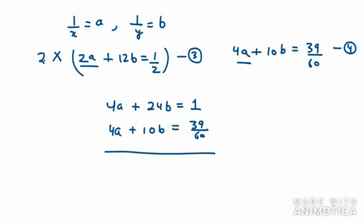Now we need to subtract equations 3 and 4. So changing all signs, we get 4a subtracted 4a equals 0. Then we have 14b equals 1 minus 39 over 60, so 1 minus 39 over 60 will be 21 over 60. Now using cross multiplication, we get 21 over 60 into 1/14. We can cut down 21 and 14 with 7, so it will be 3 over 2. Now we can cut 3 with 60, so it will be 20 here. So 1 over 20 into 2 is 1 over 40. b value is 1 over 40.